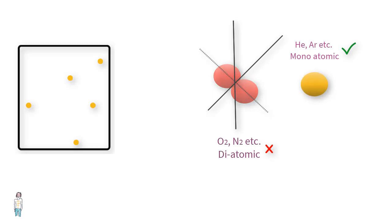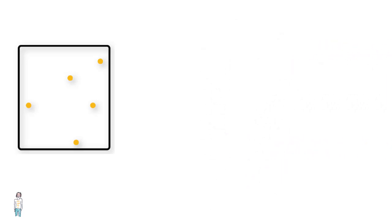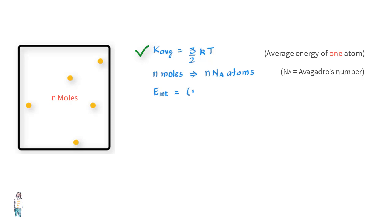We've already found that the average translational kinetic energy of an atom is a function of temperature of the gas and is given as K_avg = (3/2)kT. If n moles of such a gas will contain n·N_A atoms, then the internal energy of this sample of n moles is n·N_A·K_avg, which equals n·N_A·(3/2)kT.